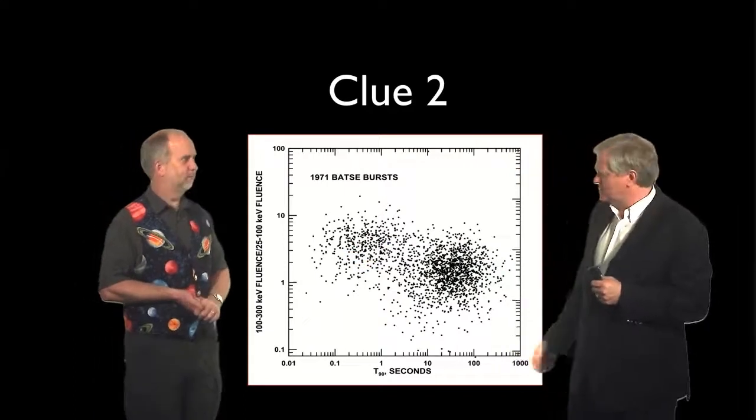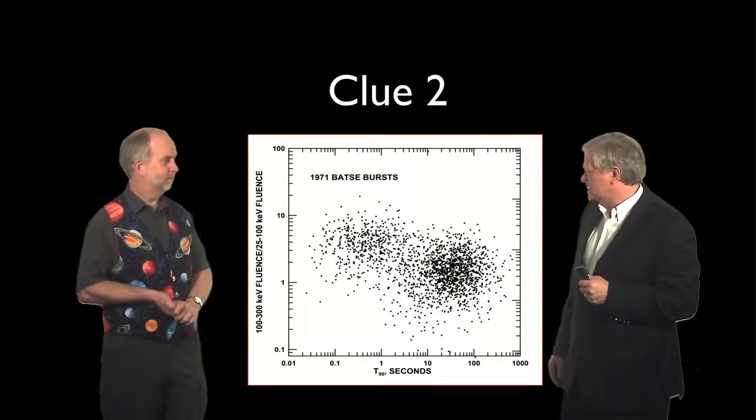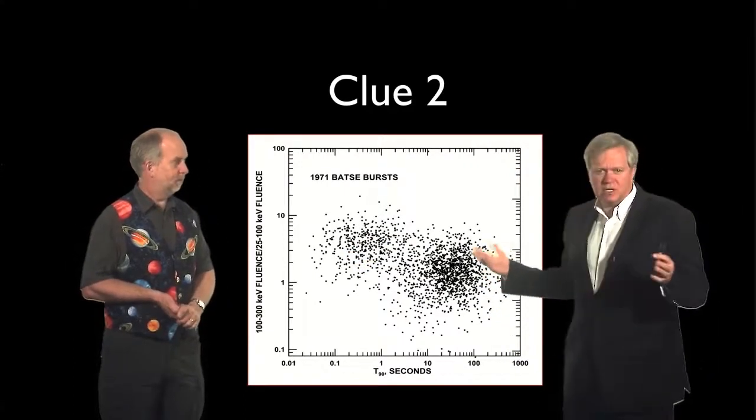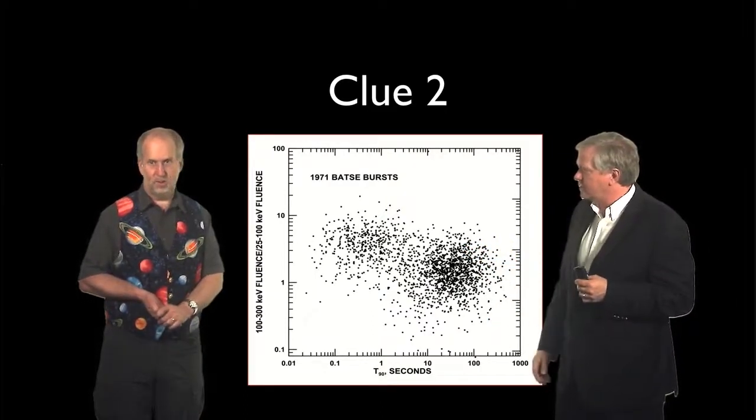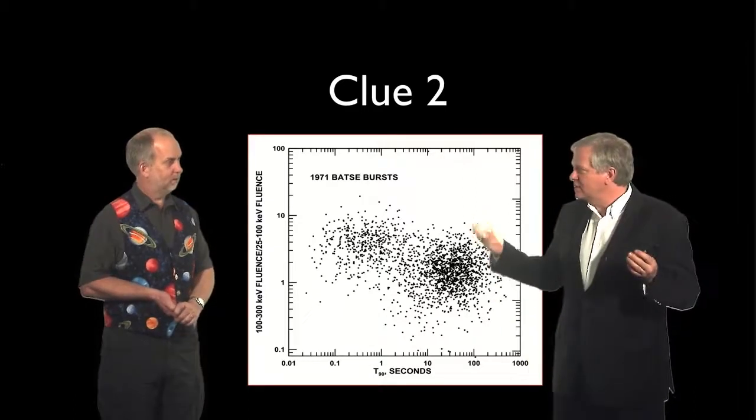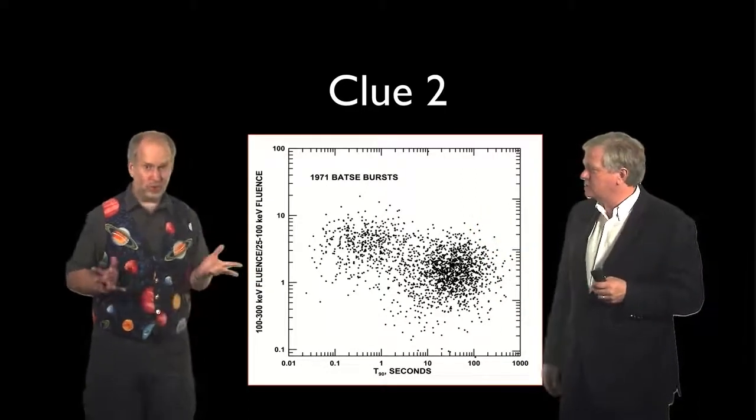So that seems to indicate, well, you can imagine it could mean many things. But the obvious thing is that there are actually two types of objects producing these flashes of gamma rays. Not one mystery, but two.